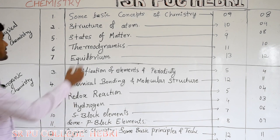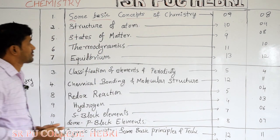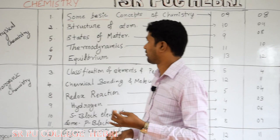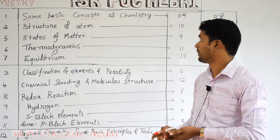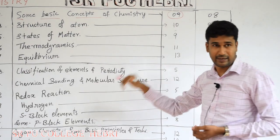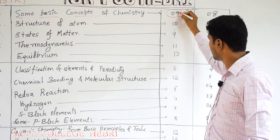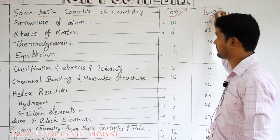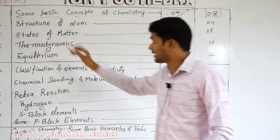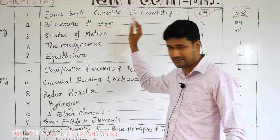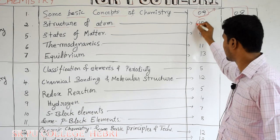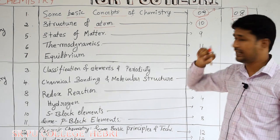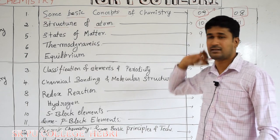The first chapter in physical chemistry is 'Some Basic Concepts of Chemistry.' This chapter includes various concepts you have studied in your 7th, 8th, 9th, or 10th standard. The total number of hours allotted is 9 and total weightage of marks is 8 — so you will get questions for 8 marks from this chapter. The second physical chemistry chapter is 'Structure of Atom,' which you may have studied before. Total hours allotted is 10 and total marks weightage is 9.